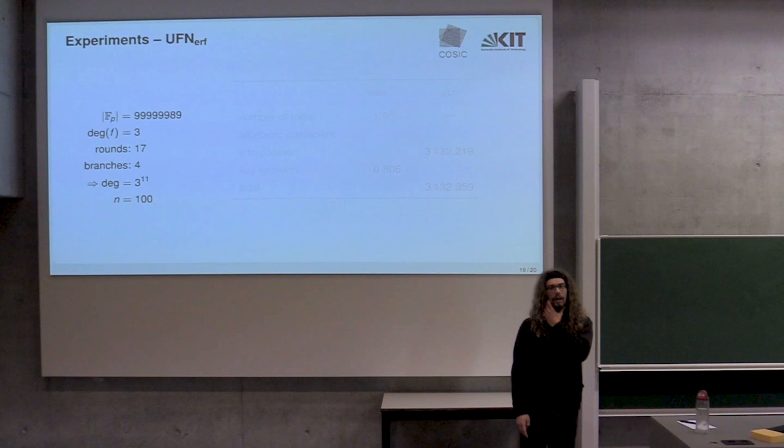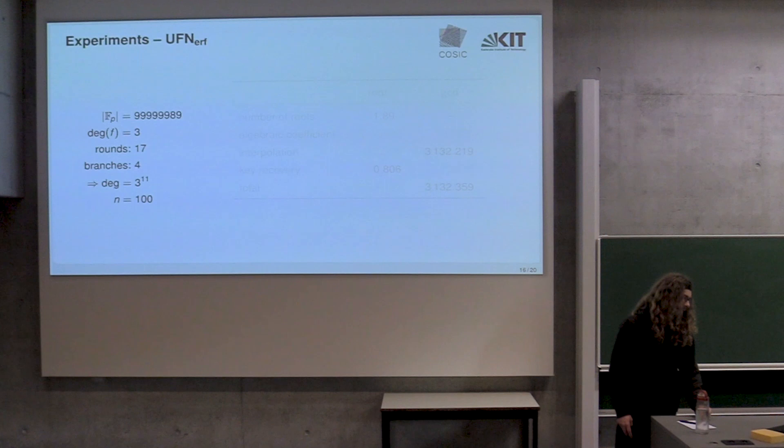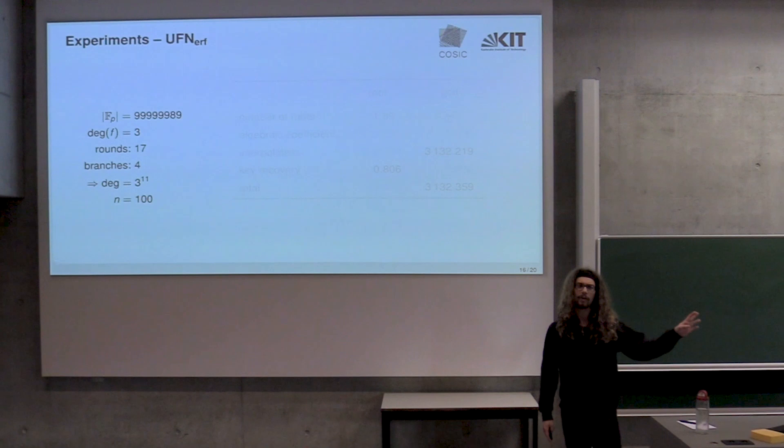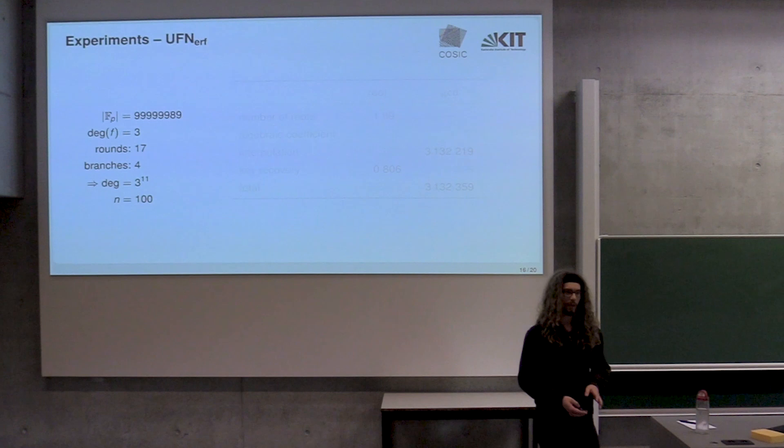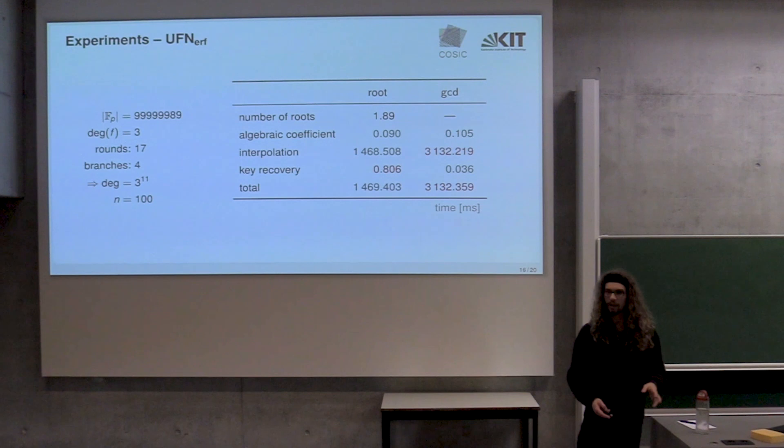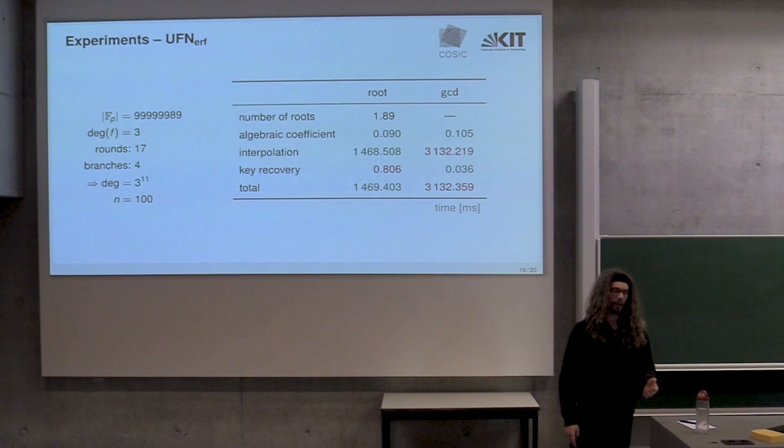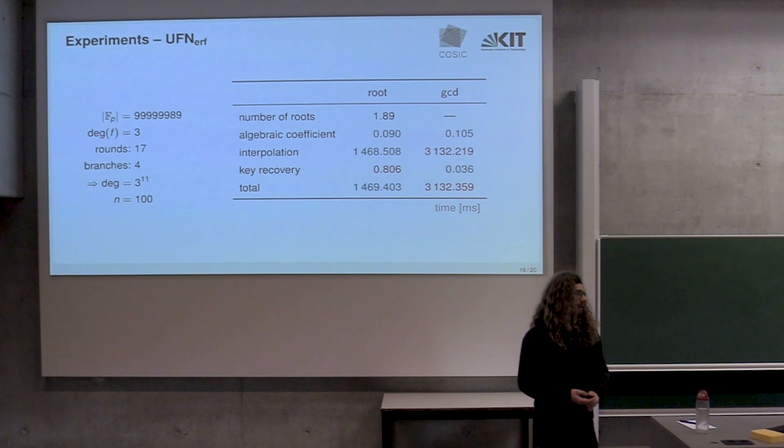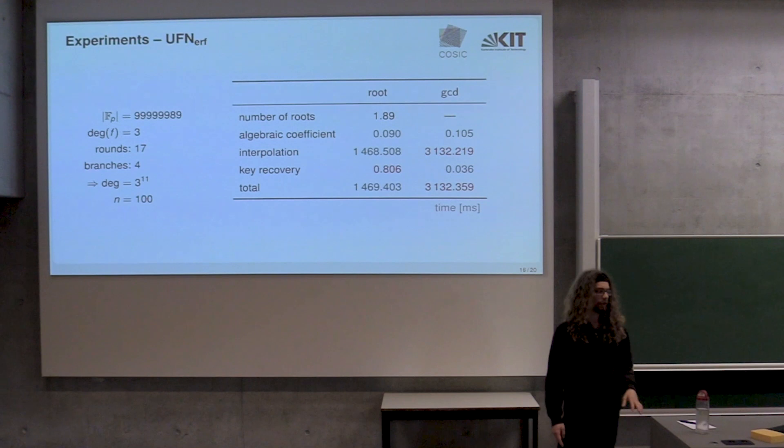We ran some small scale experiments with these parameters. We picked a prime that is sufficiently small for us to actually work with. Our round function had degree three. We had 17 rounds. With these parameters, 23 rounds should max out the polynomial, but my machine couldn't handle that. What resulted was a polynomial of degree three to the 11. These are the run times for each of the steps. The actual numbers don't really matter, it's just for comparison amongst the steps. As you can see, the interpolation part dominates by a large margin the computational time needed.